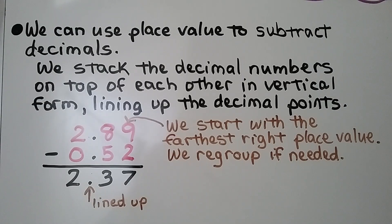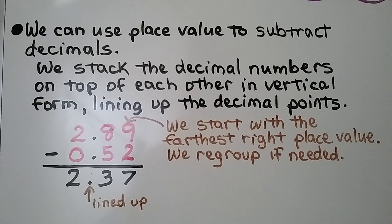We can use place value to subtract decimals. We stack the decimal numbers on top of each other in vertical form, lining up the decimal points. We start with the farthest right place value and we regroup if needed.